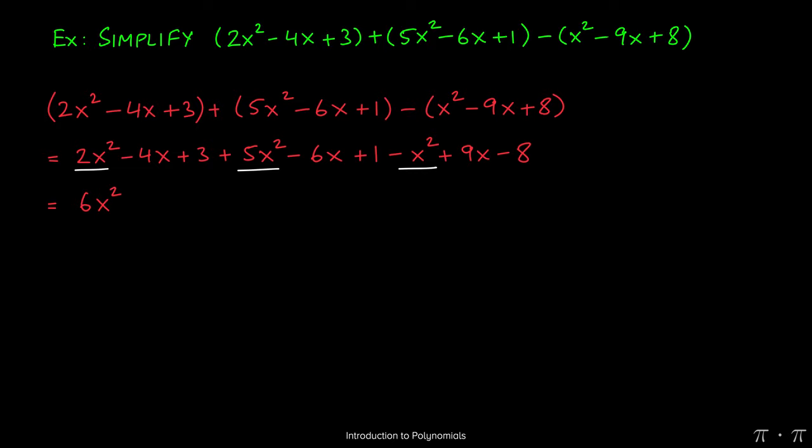Next, we turn our attention to the x's. Negative 4x minus 6x is negative 10x plus the 9x gives a negative x. Finally, the 3 plus the 1 is a 4. 4 minus 8 is negative 4.